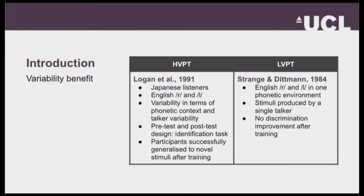High variability phonetic training was introduced by Logan and colleagues in 1991. This was a very influential study in which they trained native Japanese listeners to discriminate the English phonetic contrast between R and L — the labial sounds — given that Japanese speakers do not really have the L in their phonemic inventory. What they did was include variability in the training stimuli in terms of two things.